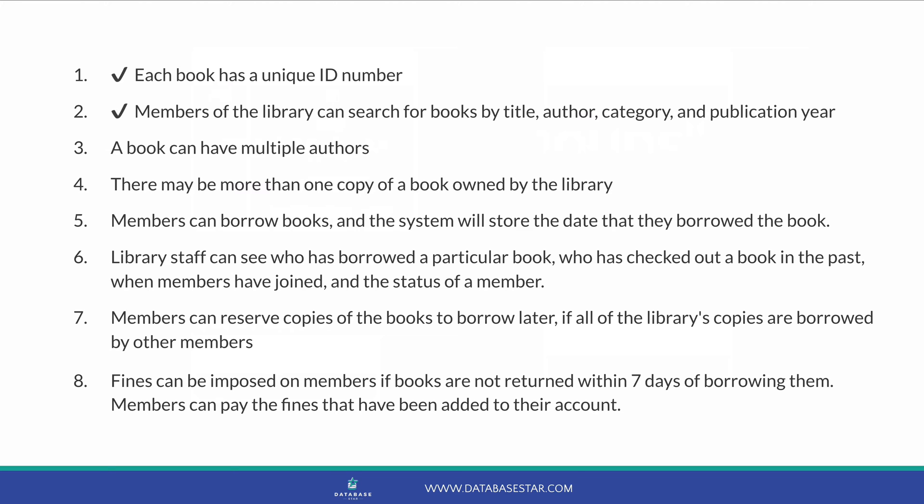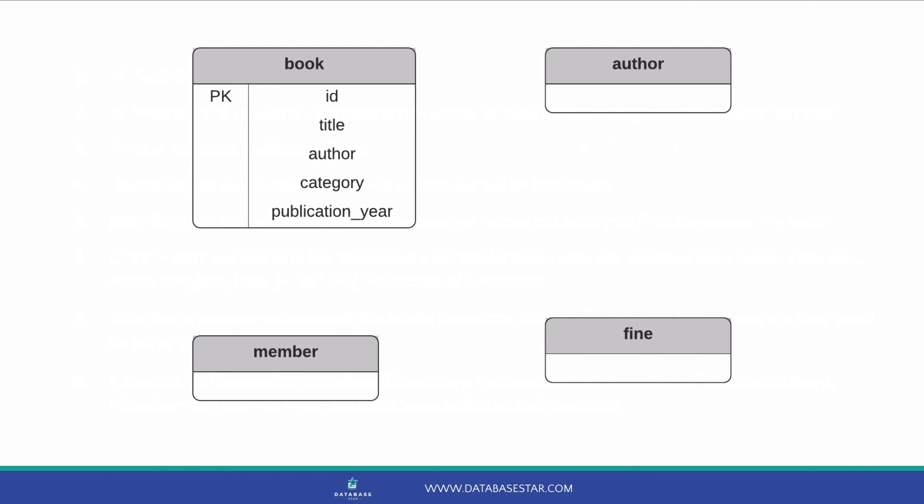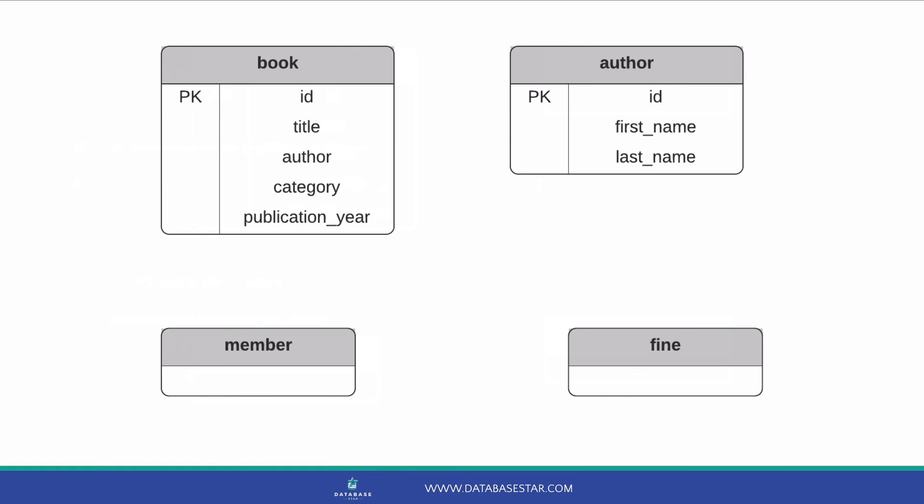What about requirement 3? A book can have multiple authors. Our ERD currently has the author as an attribute of a book, meaning a book can only have one author. We could add the second author into the same field, but that's not ideal — it would be hard to process two values in a single field, and there would be some duplication across rows. Ideally, we would have a table for authors and relate authors to the books they've written. I've added a primary key called ID, first name, and last name. These were not mentioned in the requirements, but it's a reasonable assumption that an author has a name.